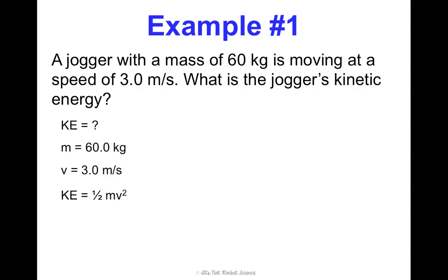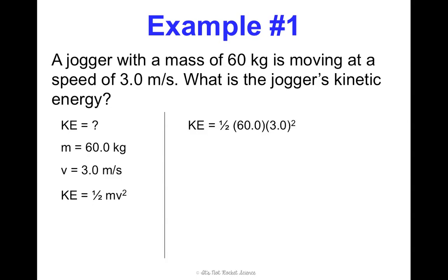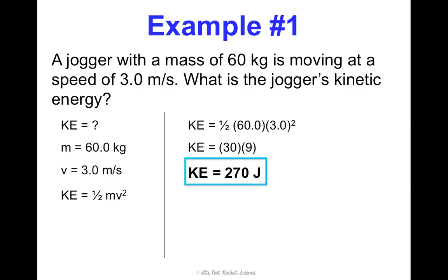Our equation is KE equals one-half m v squared, and what I'm looking for is already isolated, so I can go ahead and solve. Plugging in: KE equals one-half times 60 times 3 squared. Half of 60 is 30, and 3 squared is 9, so we get 30 times 9, which is 270 joules.